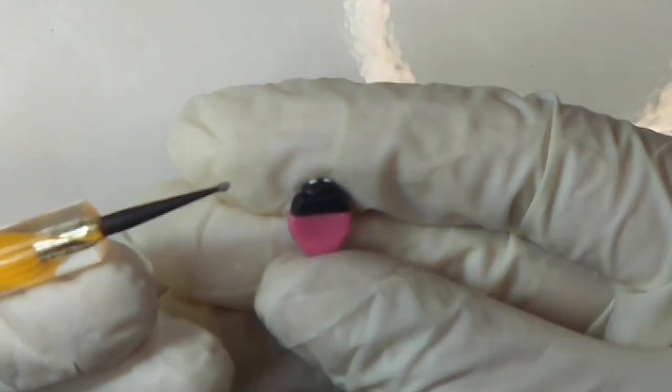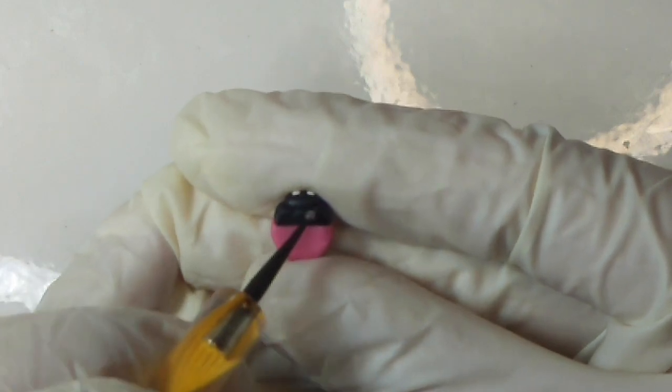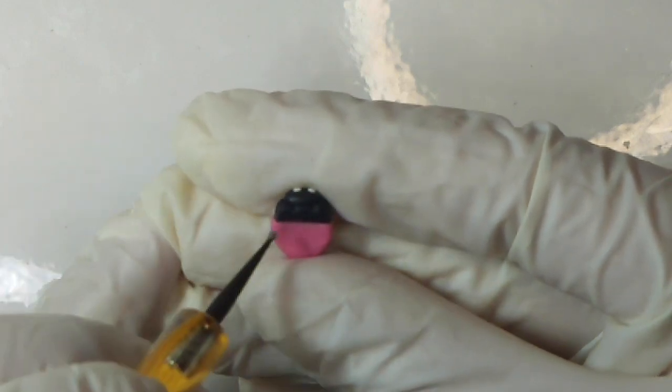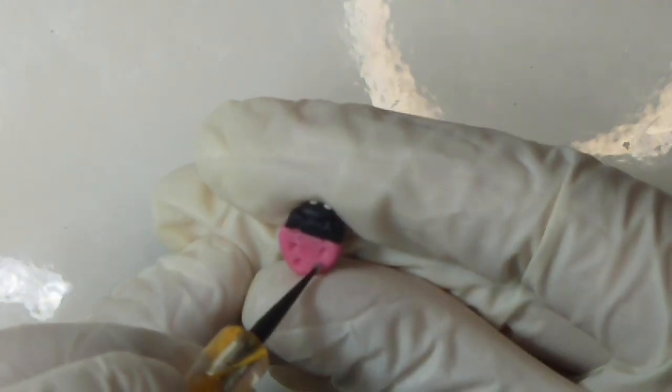To add legs, just flip over your ladybug, get your smallest dotting tool, and just make some dots on the back. Once you've made your indents, go ahead and bake your clay according to your clay's instructions.